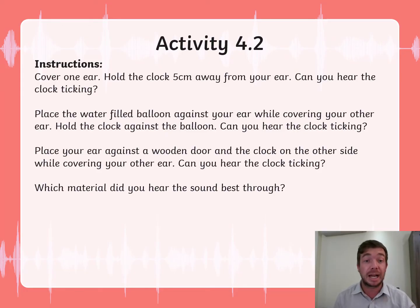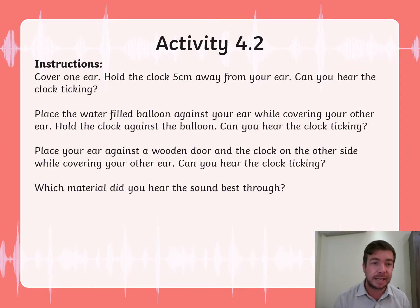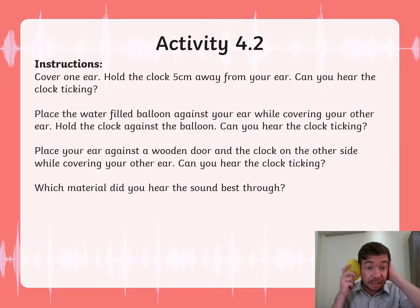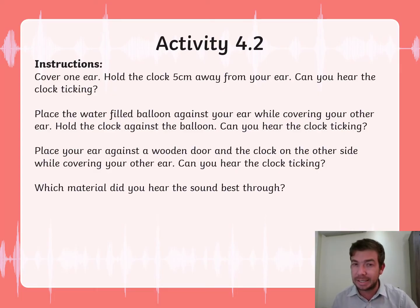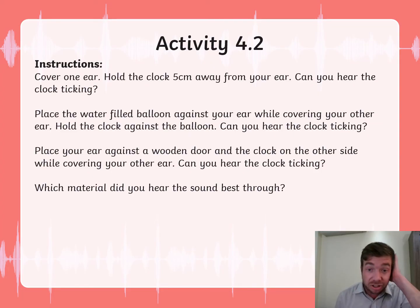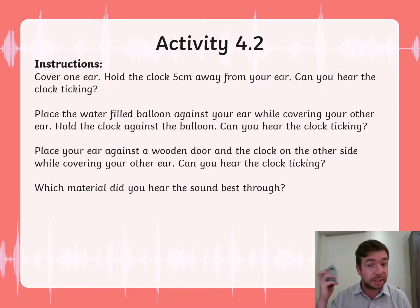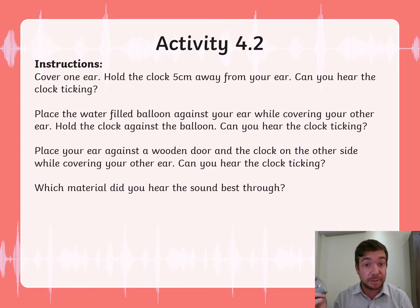First, cover one ear and hold the clock about 5 centimeters away — can you hear the clock ticking? Next, close one ear with your hand, put the balloon against the other ear, and have somebody help you by holding the clock almost 5 centimeters away from the balloon. Do that and find out — can you hear the ticking of the clock? Lastly, hold your ear against the wooden door while the other ear is closed, and somebody else holds the clock on the other side of the door, about 5 centimeters away. Even if the door is 5 centimeters thick, hold it against the door. Let's do that and see what you hear.